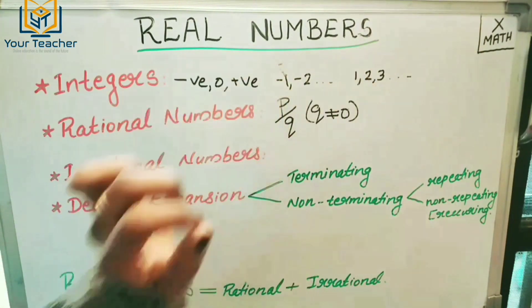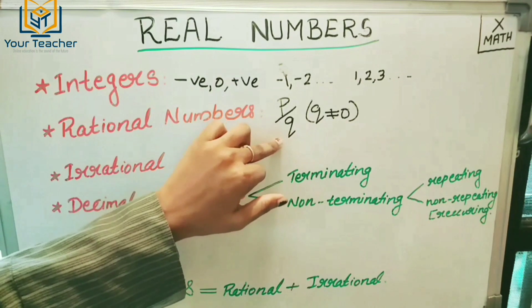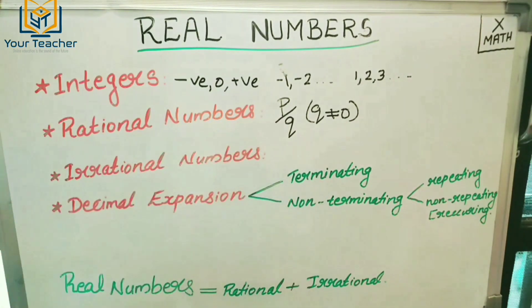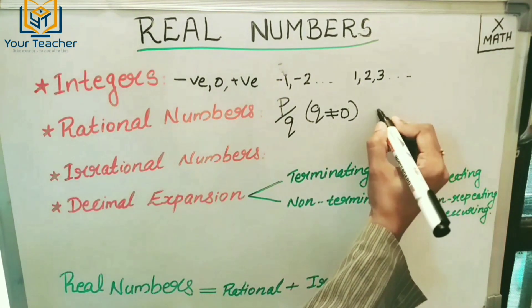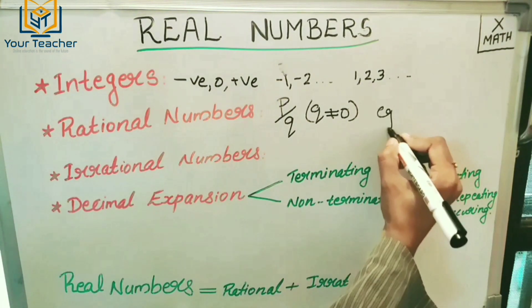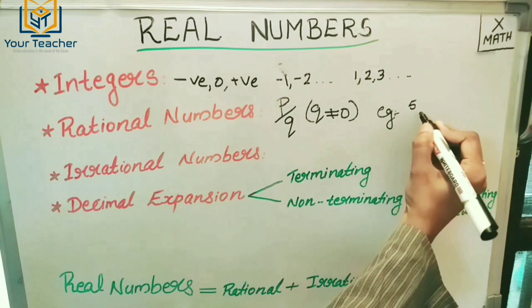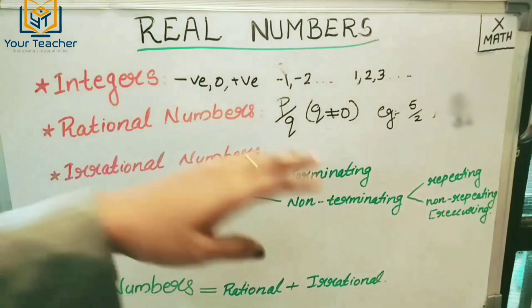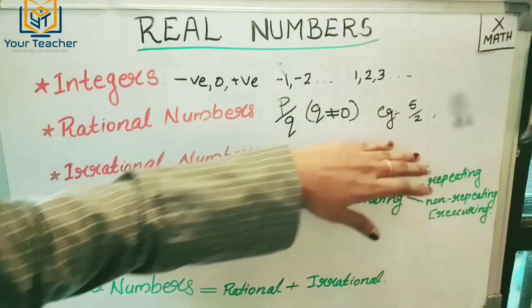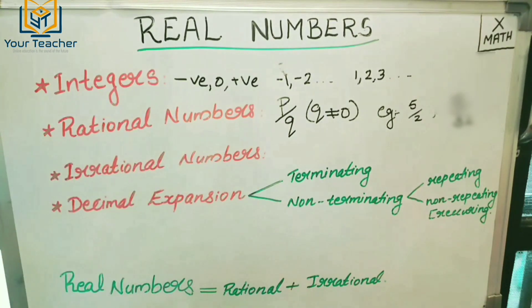Correct. Numbers written in the form P by Q are called Rational Numbers. For example, five by two — that is a rational number written in P by Q form.